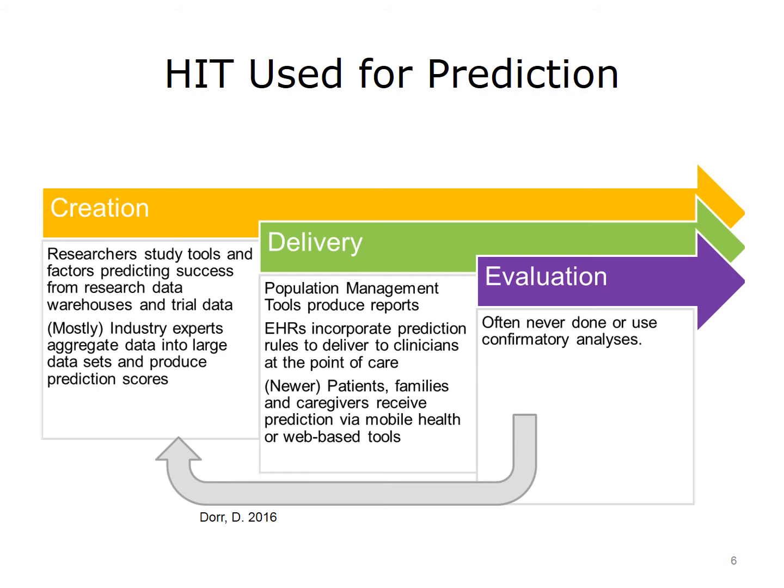In terms of delivery, HIT is used in reports produced by health systems. Additionally, rules might be put in electronic health record systems, or EHRs, to deliver recommendations at the point of care. Patients and families use HIT when they receive information via email or the web. The use of HIT for evaluation in terms of implementation and benefit-harm analysis in the real world is often limited. Industry sees the algorithms as important intellectual capital, and researchers only rarely have taken the time to see what happens after their rules are implemented. This is changing, however, as more informatics research looks at dissemination and implementation.